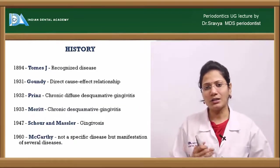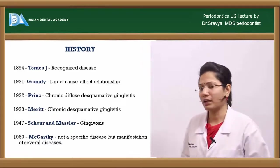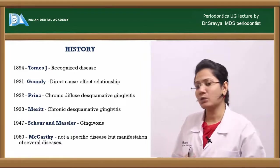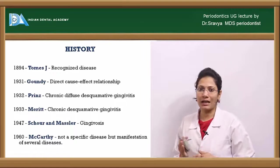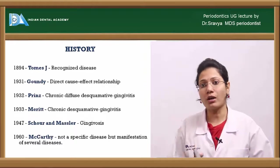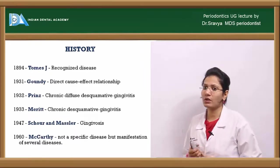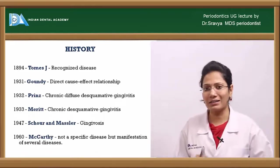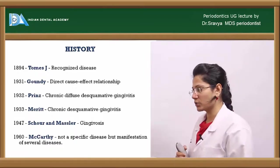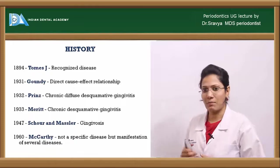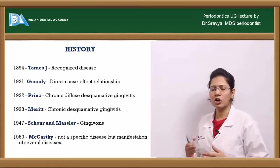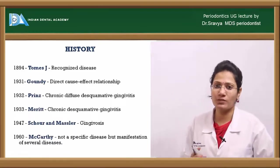Going back into history, this condition was identified in 1894 by Tomes, who was the first to recognize it. In 1931, Goundy gave a direct cause-to-effect relationship. Prince in 1932 coined the term 'chronic diffuse desquamative gingivitis.' Merritt in 1933 shortened it to 'chronic desquamative gingivitis,' and in 1947 Scott and Masler gave the term 'gingivosis.'